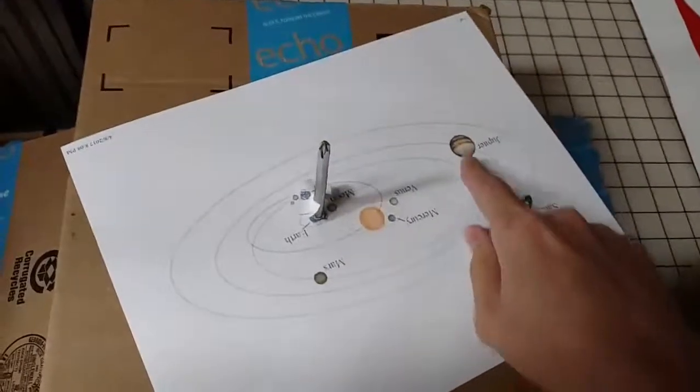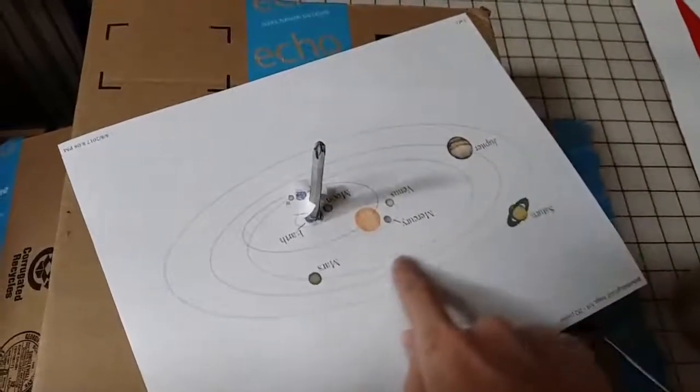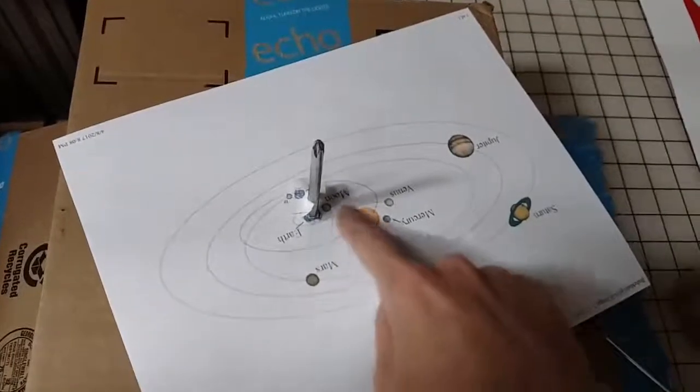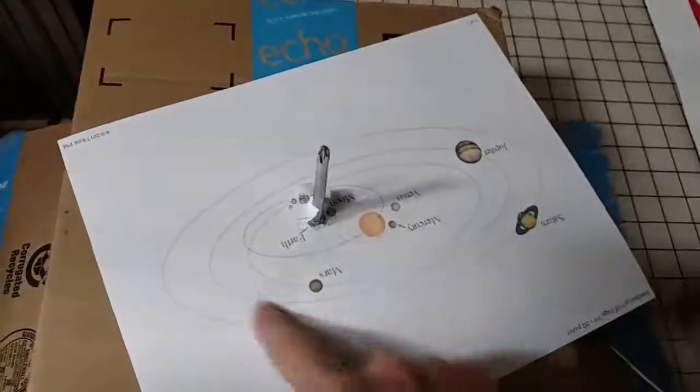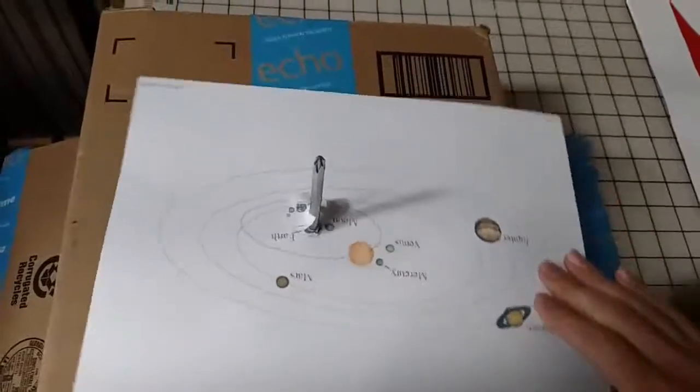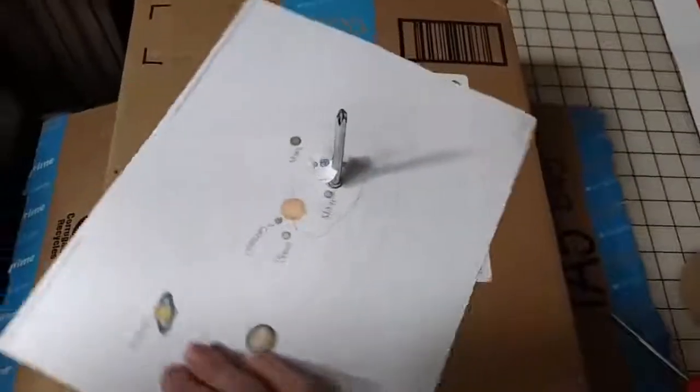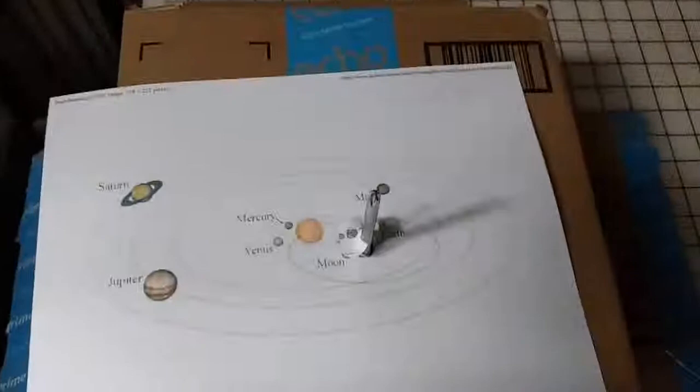Even though the planets will be going around orbits around the Sun, they'll always be going around the Sun.